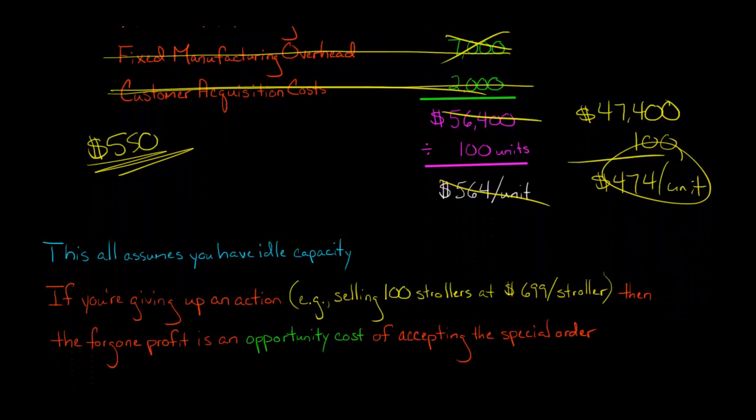Now, there's one final caveat, though. I'm assuming here that we have something called idle capacity. Idle capacity means that we've got our factory here and let's say we are not running the machines 24 hours a day, seven days a week. And I say, hey, do we have some extra capacity to make another 100 strollers? And the production manager says, yeah, it's no problem. We can do another 100 strollers. No problem.